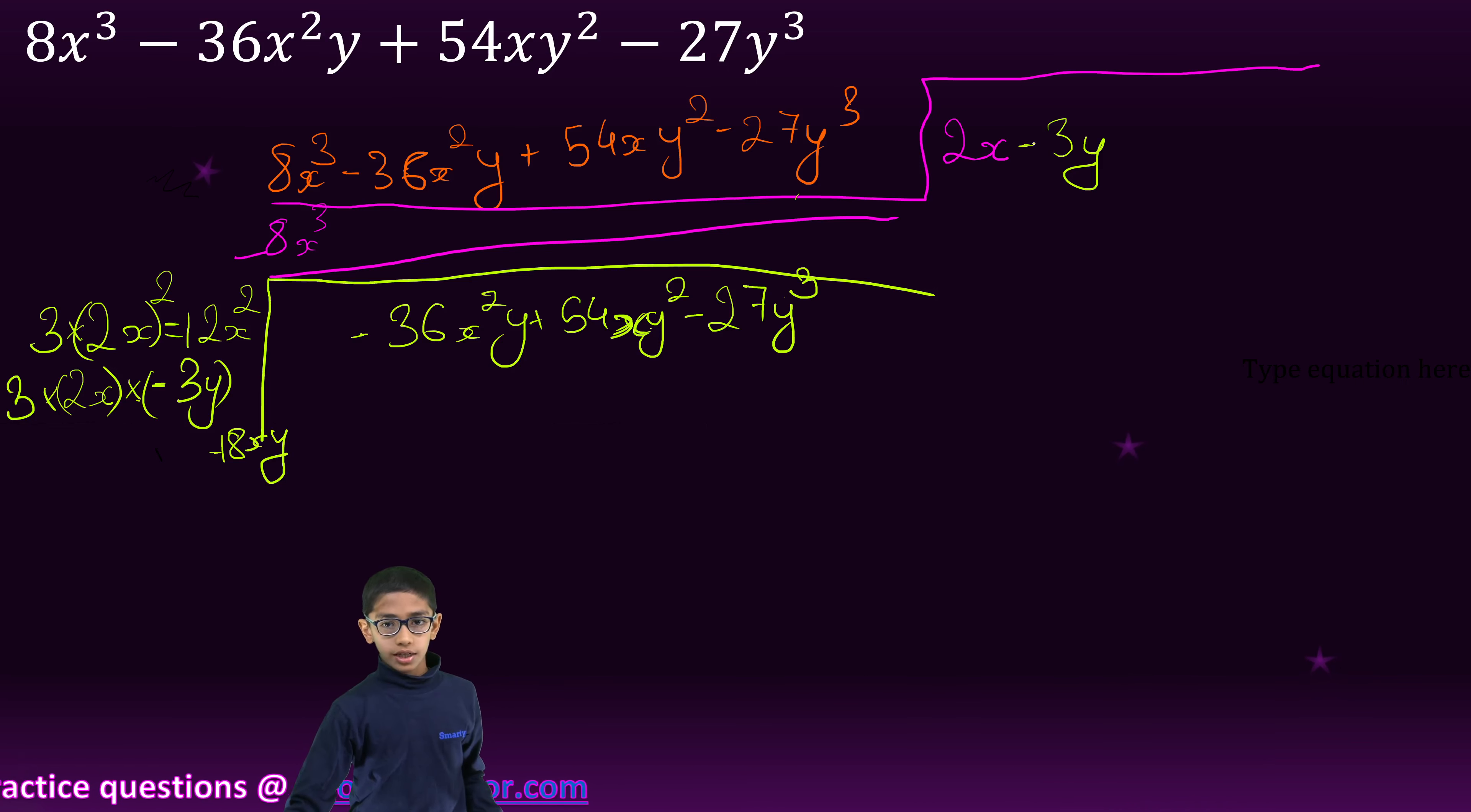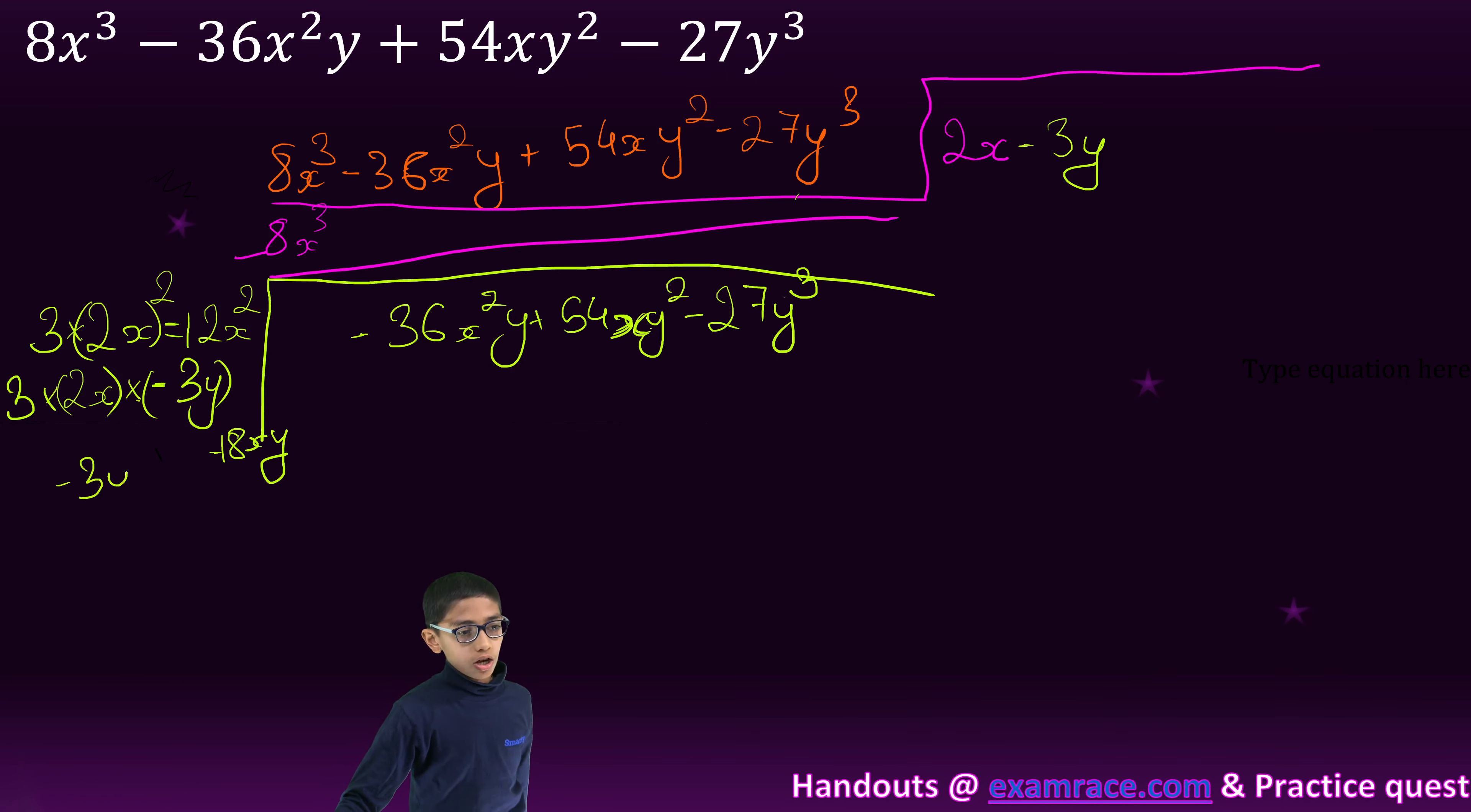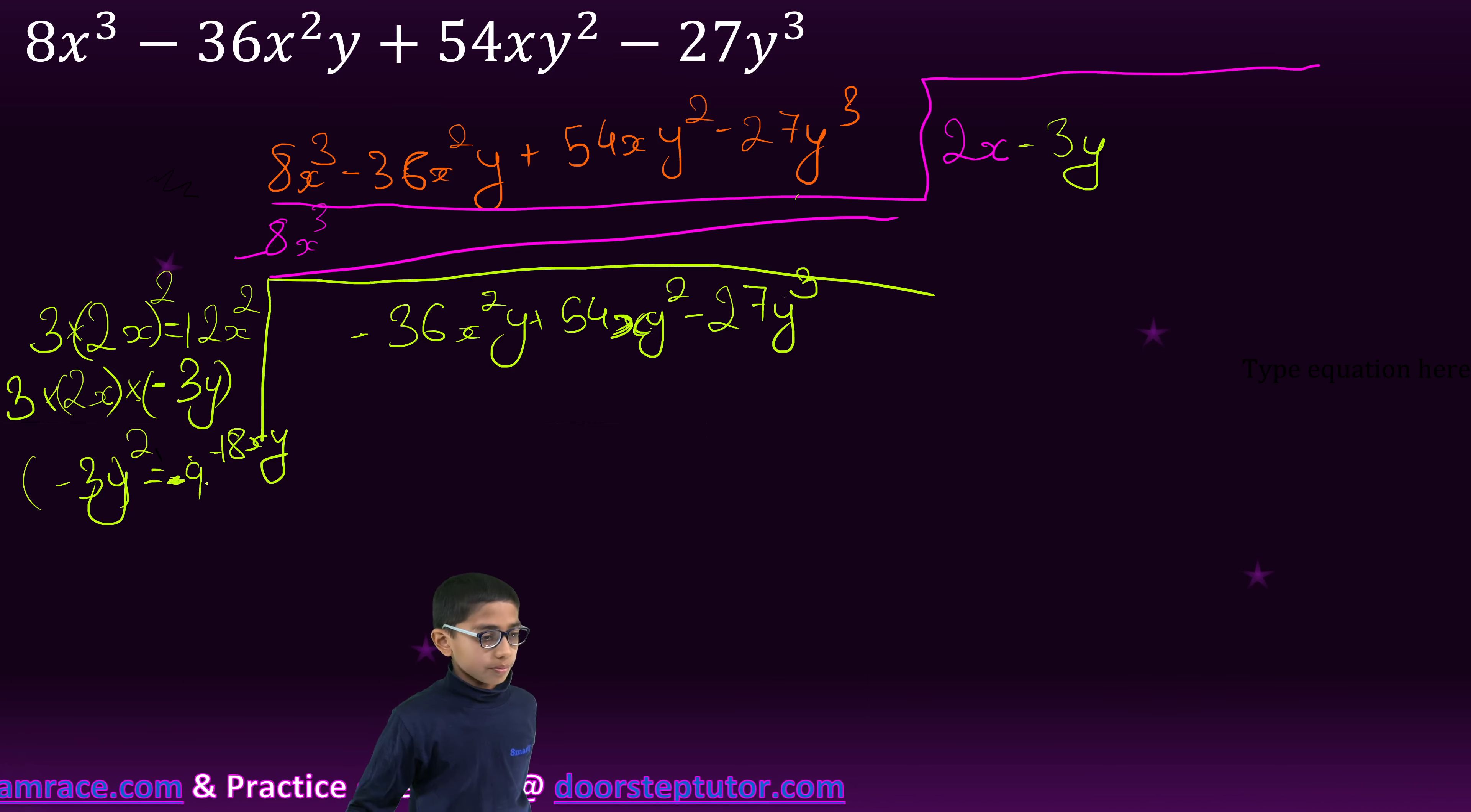The next time we will multiply minus 3y by itself. Means we will take the square of minus 3y, which equals 9y².